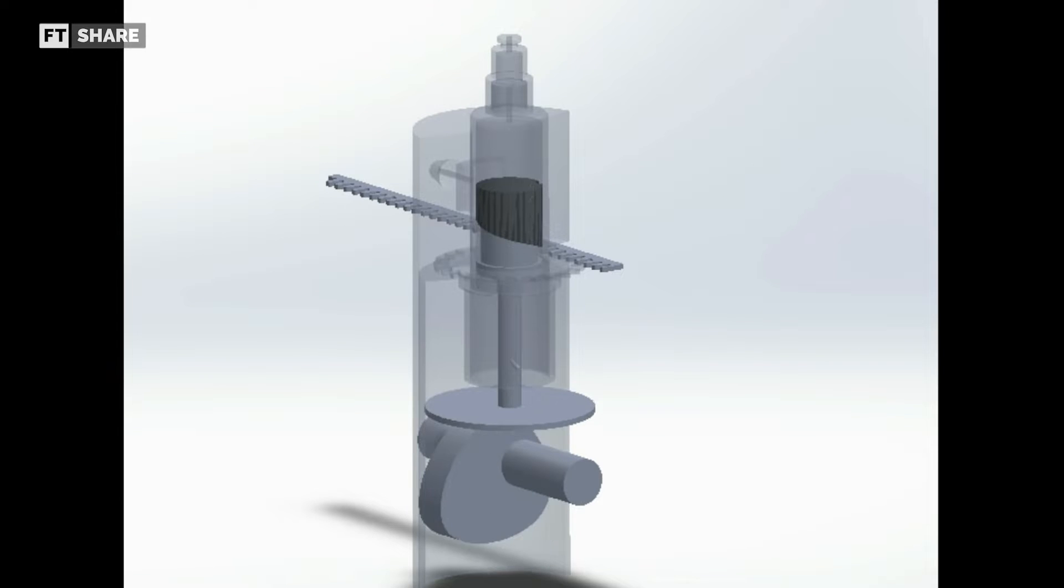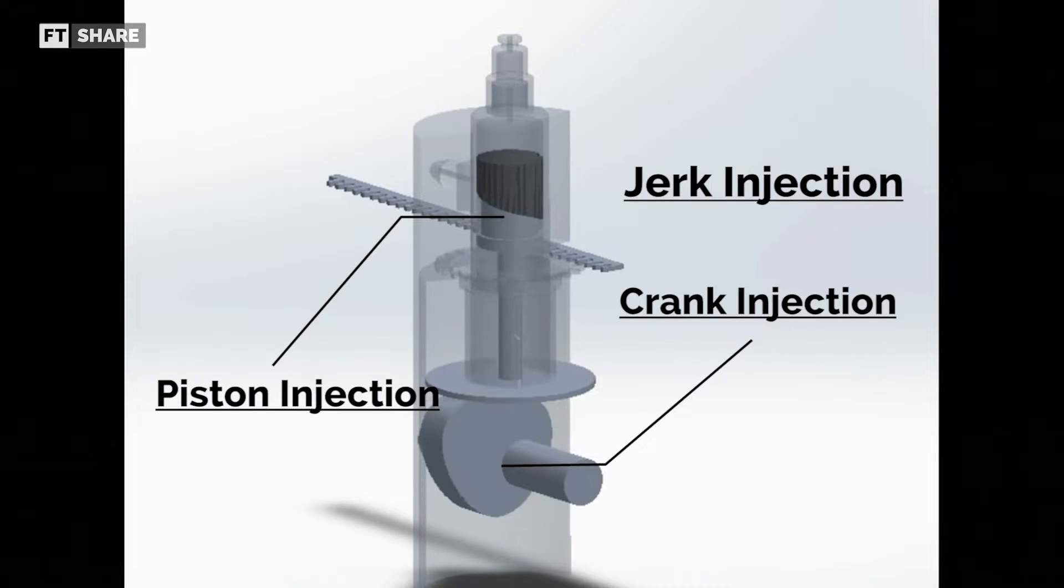But in fact, it is not as we imagine, because this first injection model has a lot of differences compared to modern injection. This first injection is called jerk injection, where the pressure obtained to pump the fuel is obtained by relying on a piston that moves mechanically.